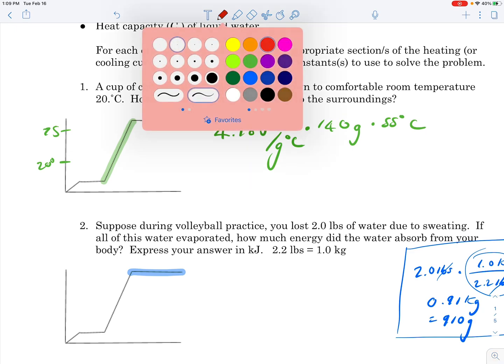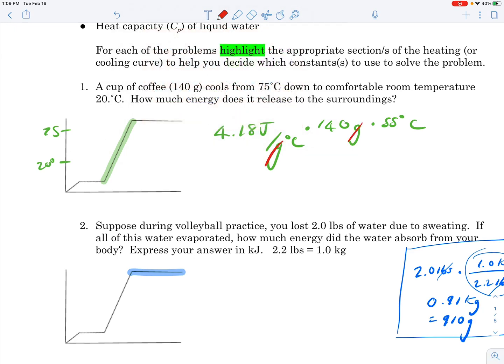Now you can see how the units cancel - grams cancels, degrees Celsius cancels. We just simply multiply those numbers together: 4.18 times 140 times 55. We want two significant figures, and if I round the number in the calculator to two significant figures, we get 32,000 joules.